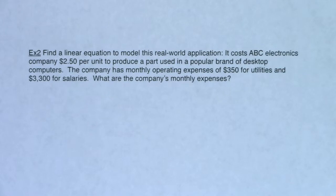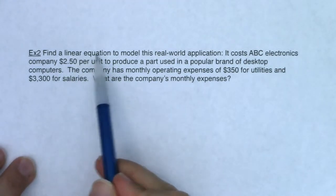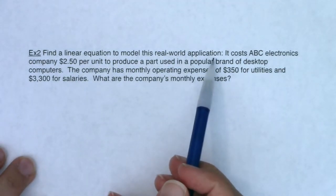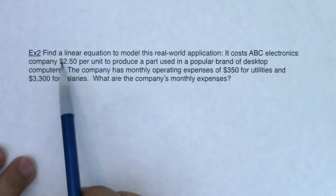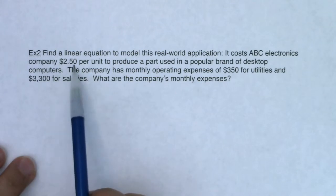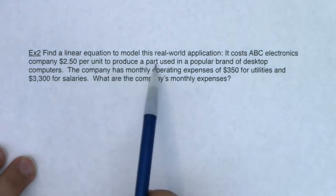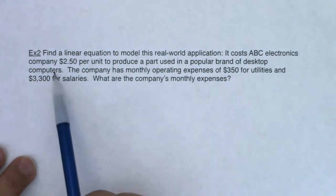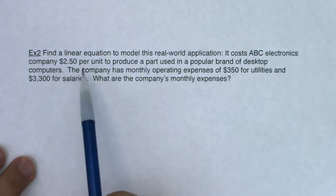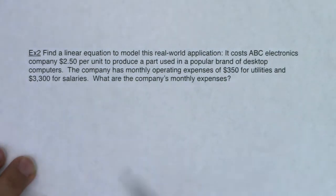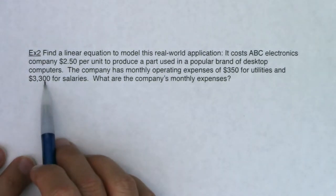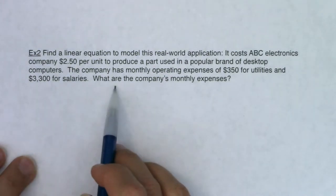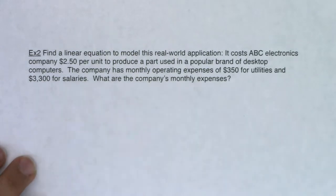Here's example two. We have to find a linear equation to model this real-world application. It costs ABC Electronics Company $2.50 per unit to produce a part used in a popular brand of desktop computers. The company has monthly operating expenses of $350 for utilities and $3,300 for salaries. What are the company's monthly expenses?